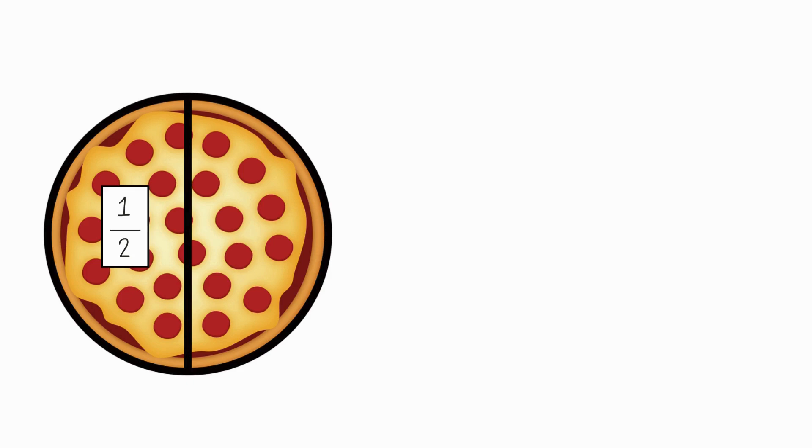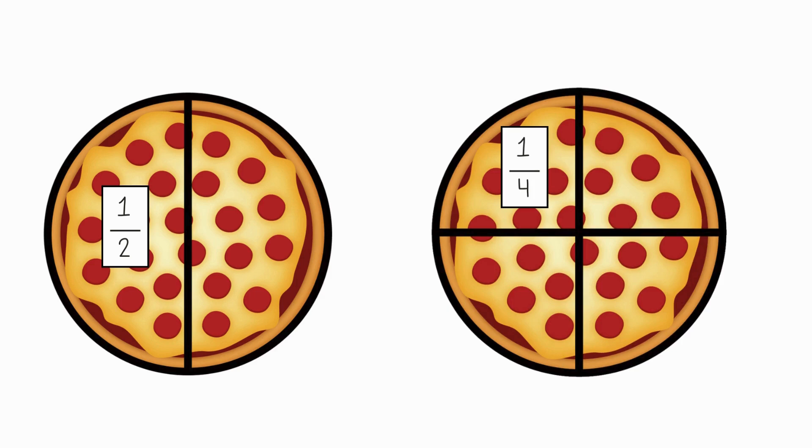Now let's try something different. What if we cut the same pizza into four equal parts? That's called one fourth or one quarter. Now compare one half or one quarter. Which is a bigger piece? One half is bigger. Even though four is a bigger number than two, the piece got smaller. That's because we're dividing it into more parts.